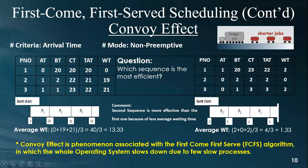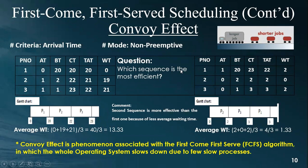Let us start with the problem we faced in First Come First Serve. In FCFS there is an effect called the convoy effect. What this means is that in this algorithm, sometimes if the longer job comes first, the shortest jobs actually get stuck behind the longer job, and it takes a lot of time to finish, slowing overall performance. This issue is called the convoy effect.